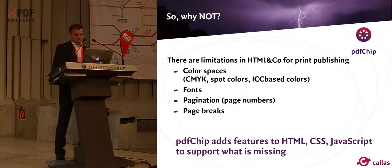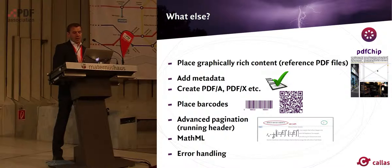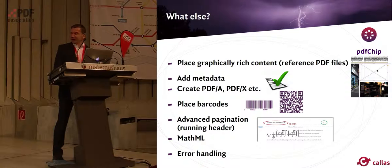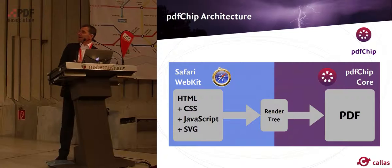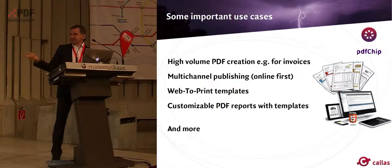Beyond that, it allows you to place graphically rich content — you can place a PDF file in your HTML content the same way you would place an image. You can add metadata, create PDF-A and PDF-X files, place barcodes. It allows not just simple pagination but also running headers, MathML, and error handling. It consists of a WebKit web engine — the same engine used in the Safari browser — combined with our PDF engine. Use cases include high-volume PDF creation, multi-channel publishing, web-to-print, and customizable PDF reports with templates.